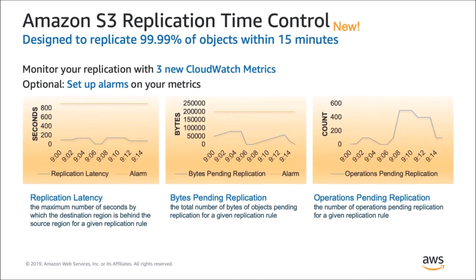S3 Replication Time Control gives you a set of metrics that you can use to monitor replication for each replication rule. These metrics tell you how many objects and bytes are pending replication and the maximum replication latency of the objects covered by your replication time control policy. You can view these metrics in the S3 Management Console or in CloudWatch and set up alarms to notify you when any of these metrics exceed a threshold of your choice. These CloudWatch metrics are aggregated for each replication rule. You may also want to monitor replication at the object level, which you can with the S3 replication events.